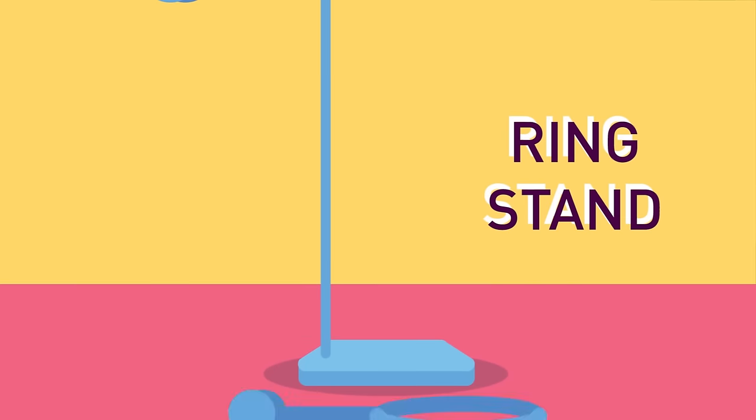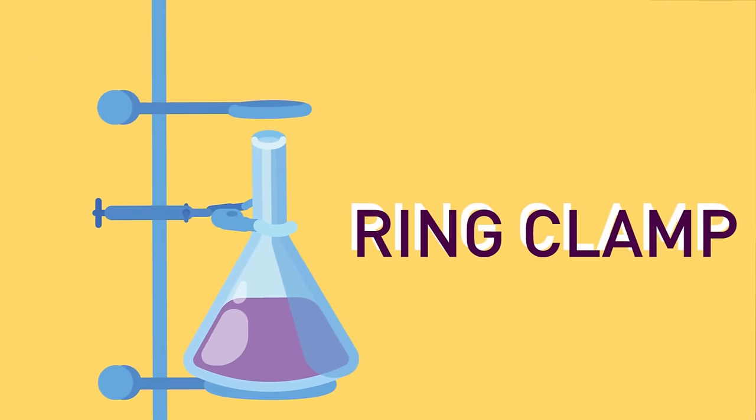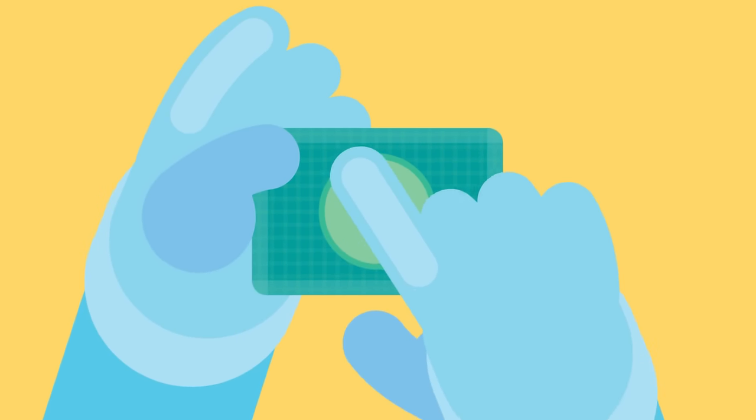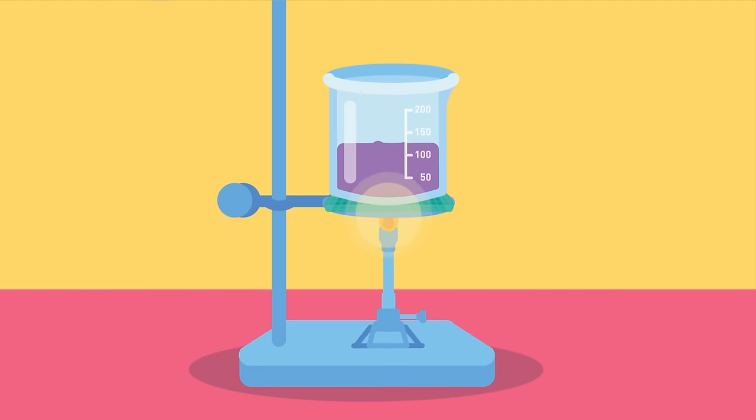Ring Stand. Used as support to clamp laboratory glassware and other equipment in place, so it does not fall down or come apart. Ring Clamp. Used with a ring stand to hold glassware, such as a beaker or a funnel. Wire Gauze. May have a fiberglass or ceramic center. Used to support a container, such as a beaker, on a ring stand while it is being heated.